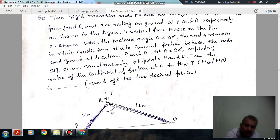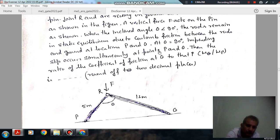When the inclined angle theta is less than 90 degrees, the rods remain in static equilibrium due to friction between the rods and ground at locations P and Q. At theta equal to 90 degrees, impending slip occurs simultaneously at point P and Q. Then the ratio of coefficient of friction at Q to that at P, mu_Q by mu_P, is dashed, rounded off to two decimal places.